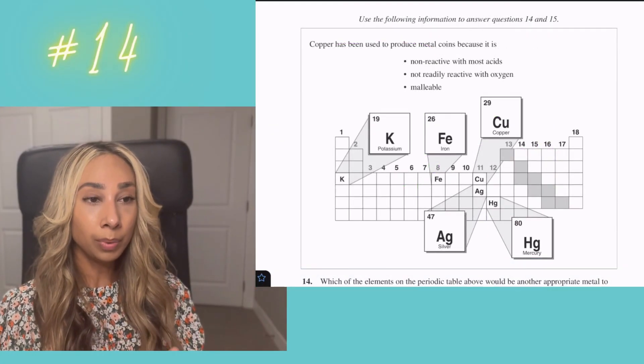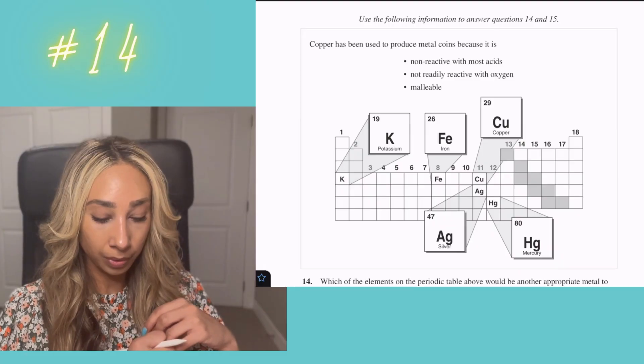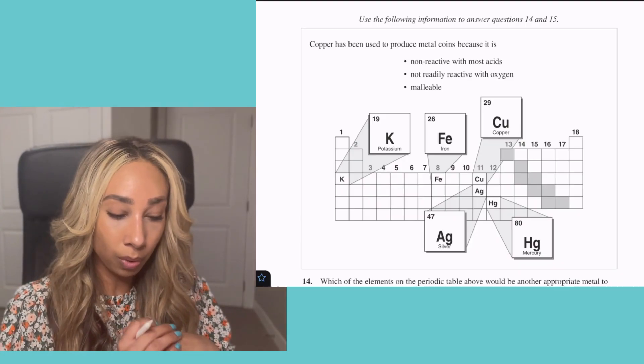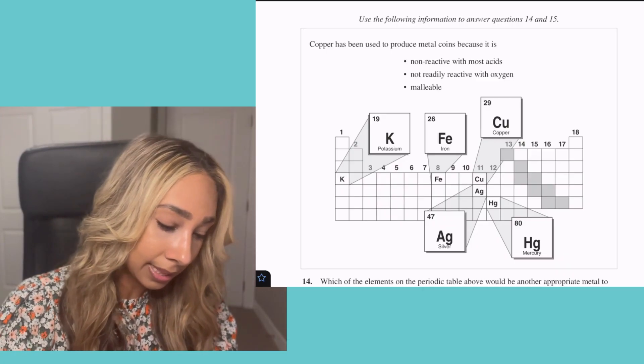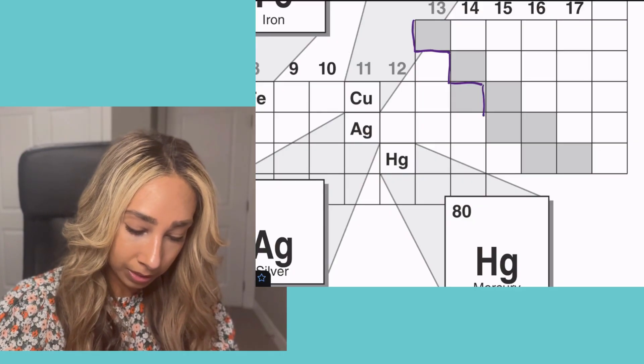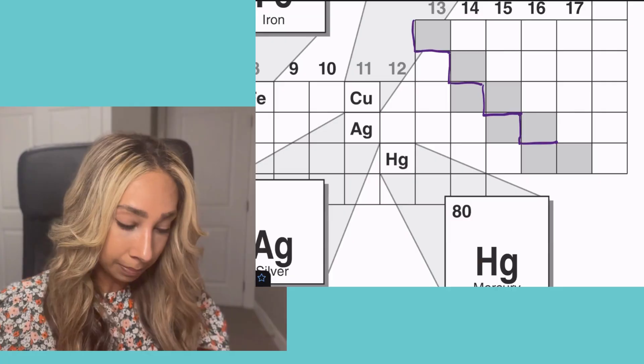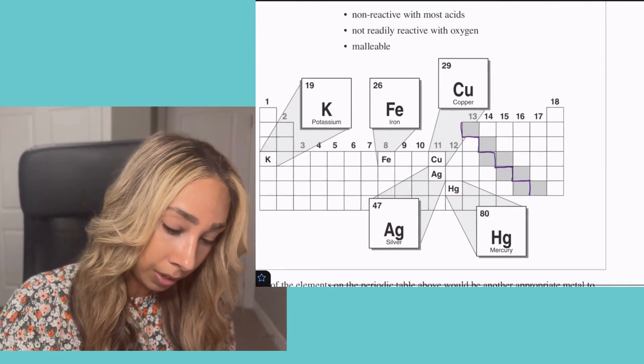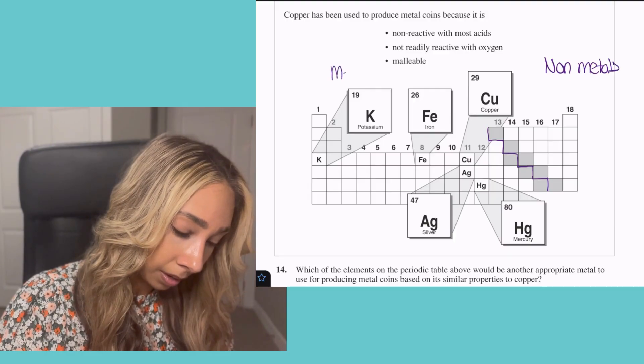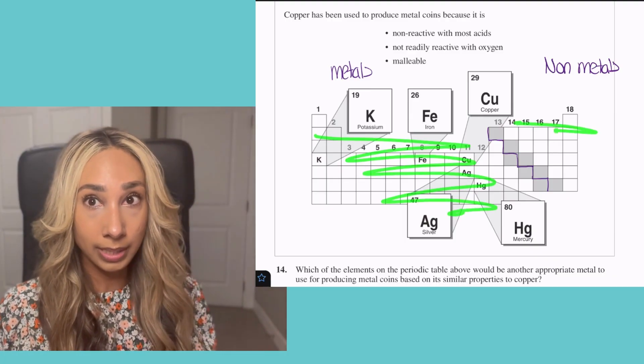In grade nine, they will give you a periodic table. You are responsible for knowing roughly about the first 20 elements, but there are trends and aspects of the periodic table you do need to know. One aspect is this staircase here. That line really divides our non-metals and our metals. Anything on this portion of the periodic table will be our metals and anything here would be our non-metals.